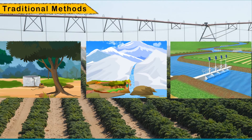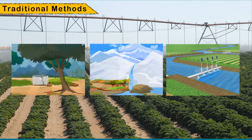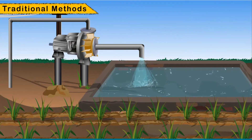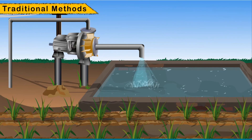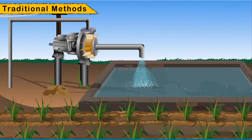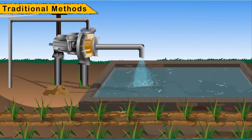These methods are very cheap but are comparatively less efficient. At some places, pumps are used for pulling water. These pumps run on diesel, biogas, electricity, and solar energy.